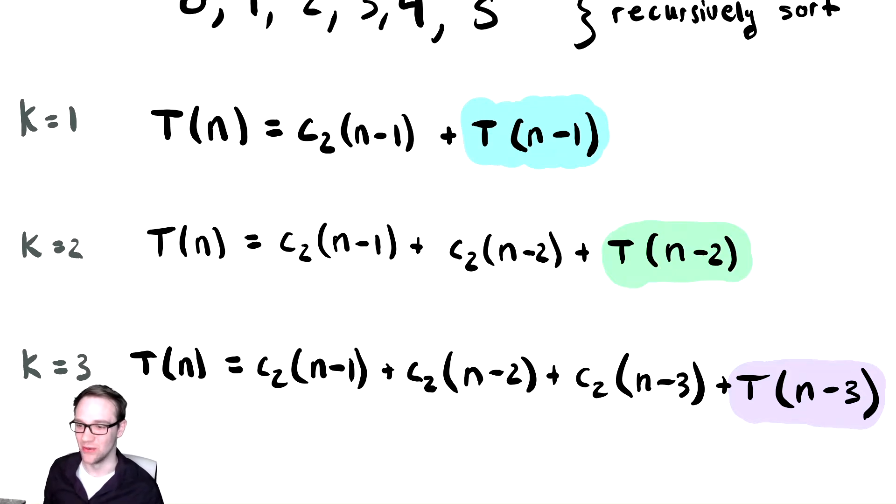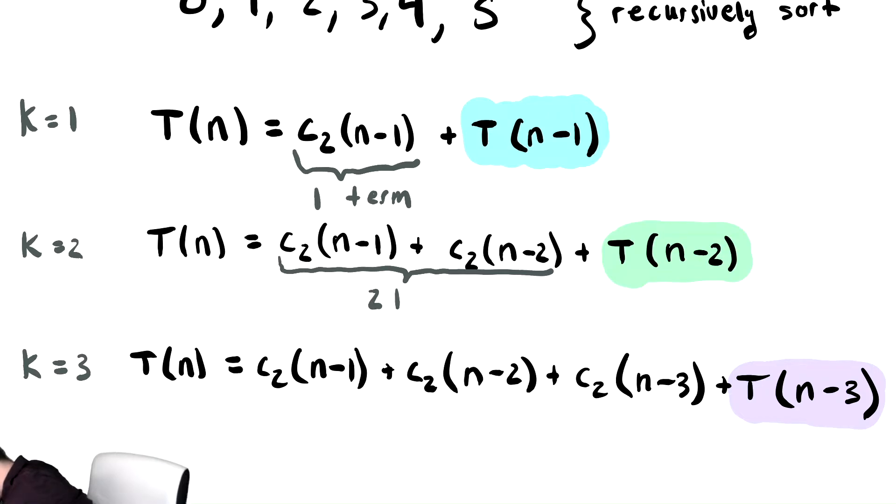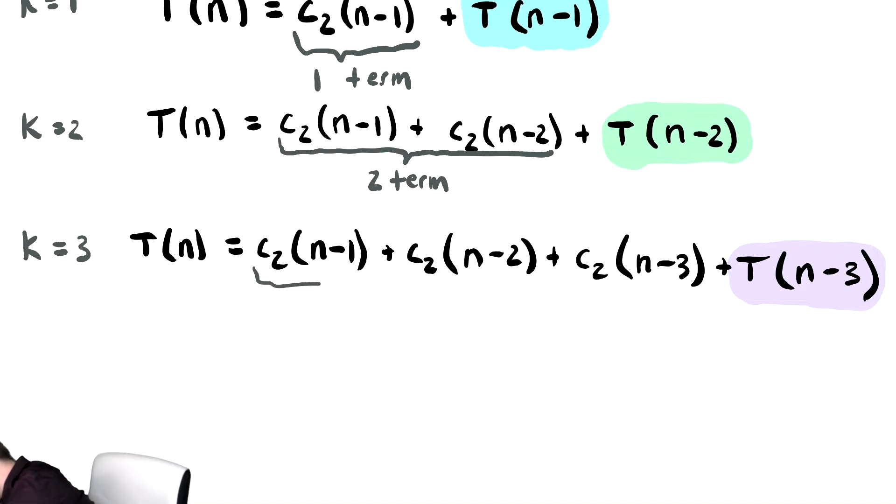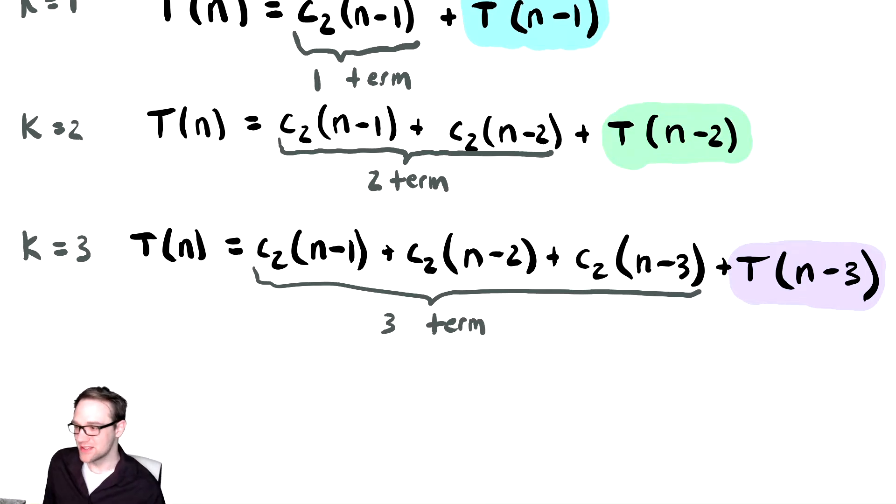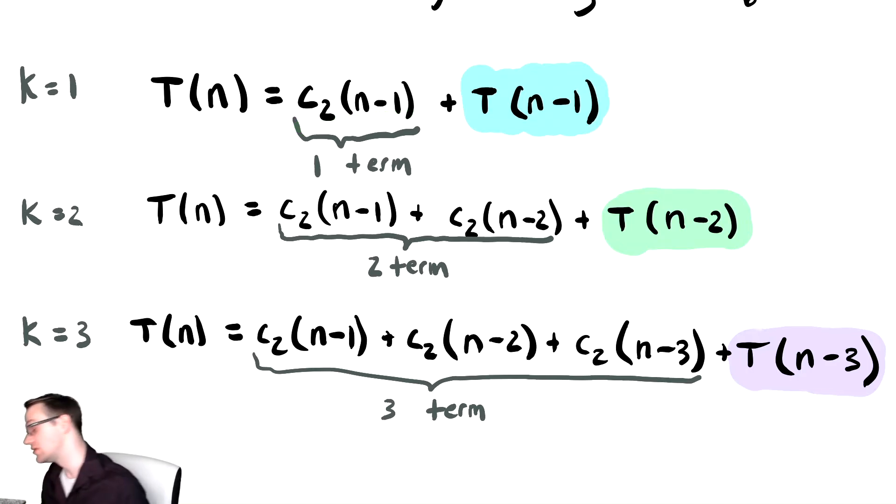The other stuff really isn't obvious. Let's try and see if we can notice anything. In this first one, there is one term that we're adding up. In this second one, there are two terms that we are adding up. In the third one, there are three terms that we are adding up. That's a way to get k shoehorned into the problem a little bit. Another thing I noticed is in the first one, I have k equals 1 and C2 times n minus 1. In the second one, I have k equals 2 and C2 times n minus 2. I have k equals 3, and I've got C2 times n minus 3.